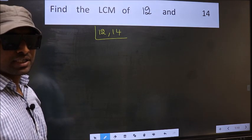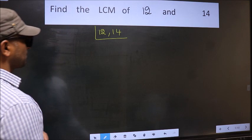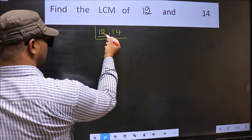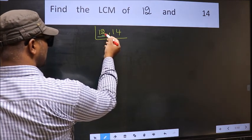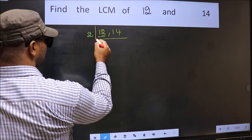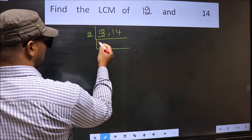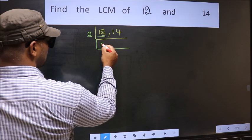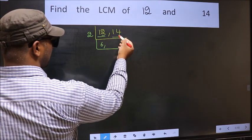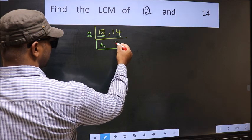Now you should focus on the first number, which is 12 here. For this number the last digit is 2, so take 2. Now, when do we get 12 in the 2 table? 2, 6, 12. Now the other number 14 — when do we get 14 in the 2 table? 2, 7, 14.